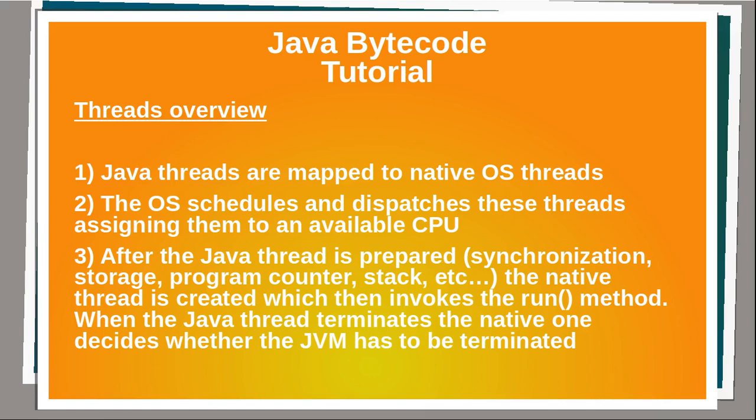After the Java thread is prepared, the native thread is created, which then invokes the run method. When the Java thread terminates, the native one decides whether the JVM has to be terminated.